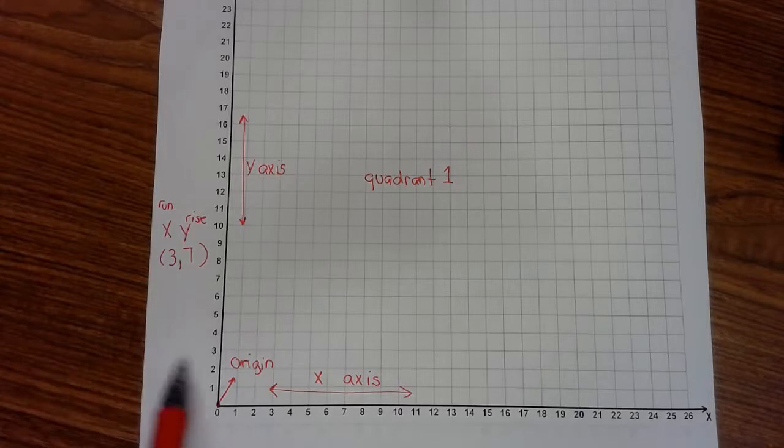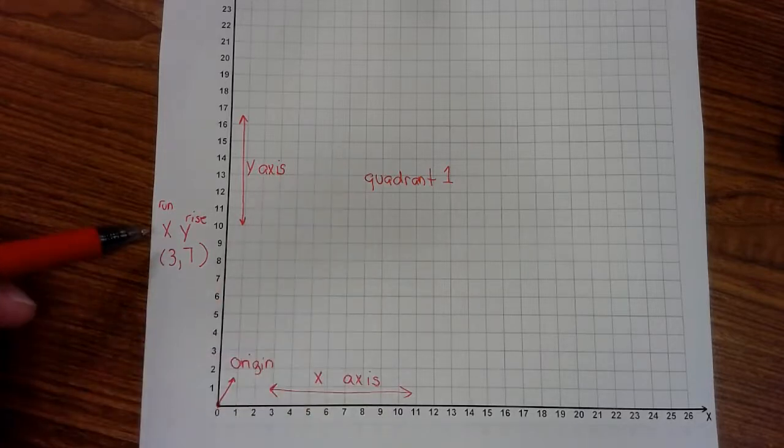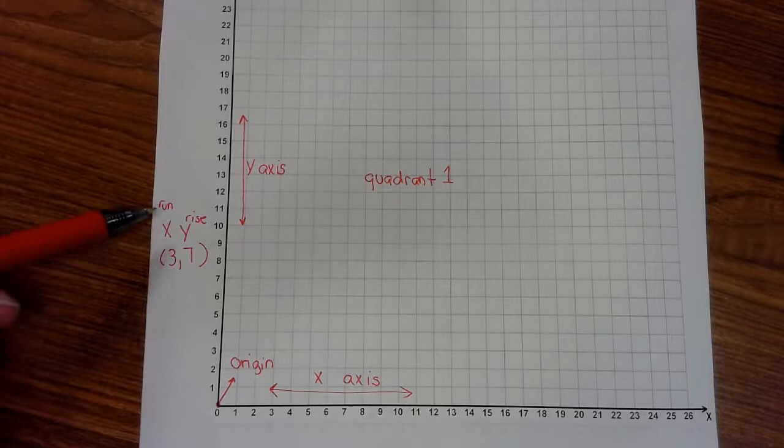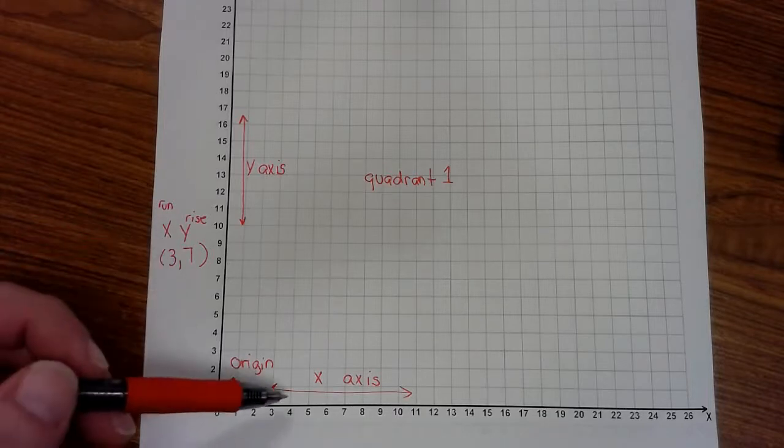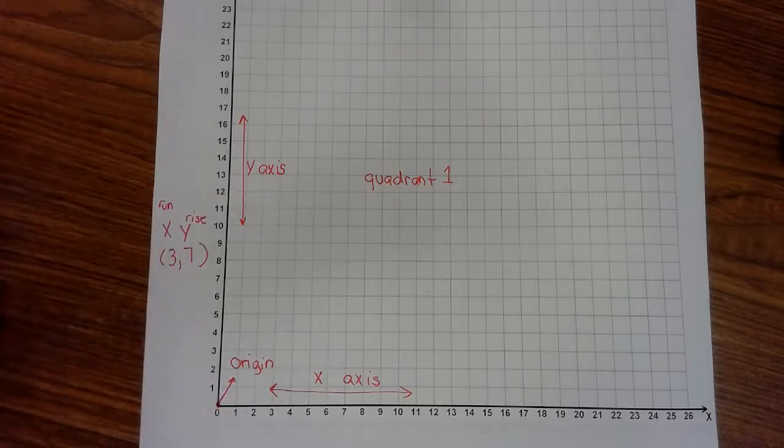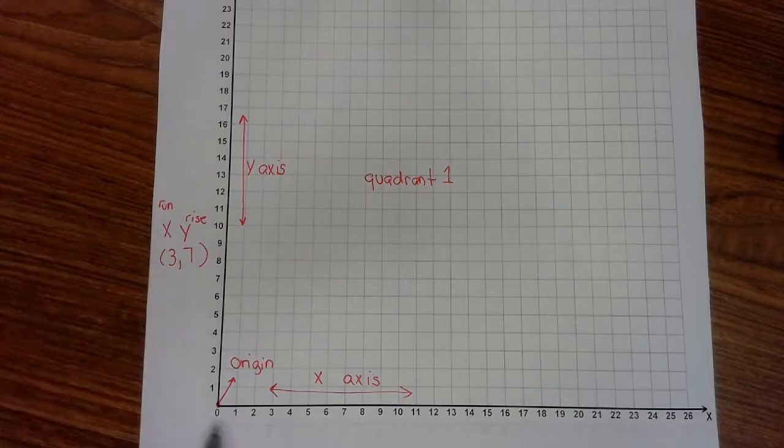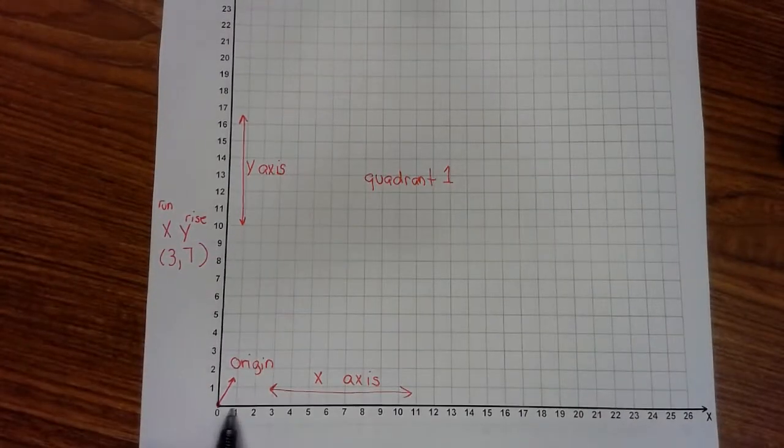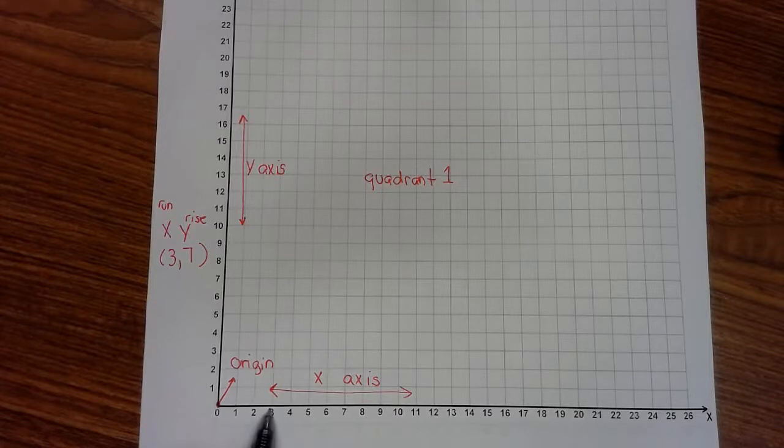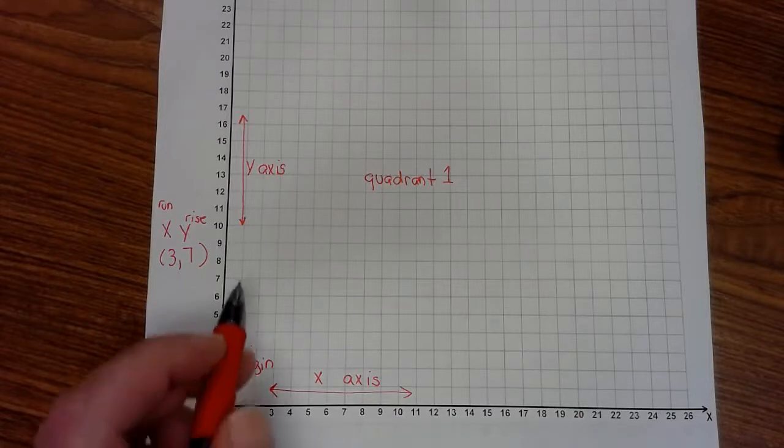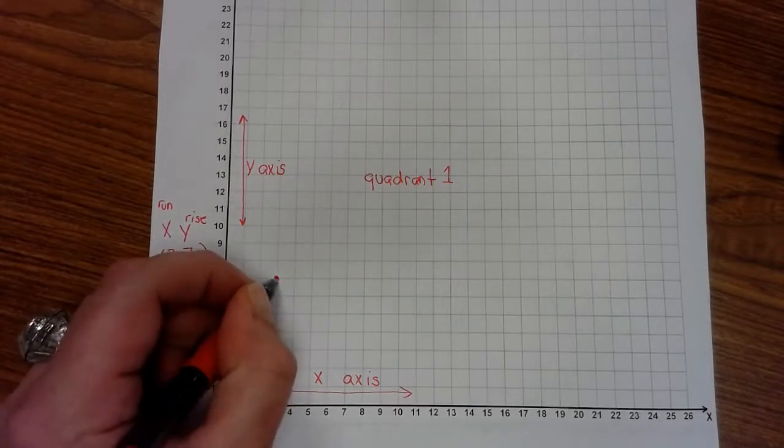X is also known as the run, and y is known as the rise. So we will always run before we rise, or you can think of it like the alphabet: x always comes first, x-y-z. So we go on the x line over 3, and then we go up 7, and then we plot the dot.